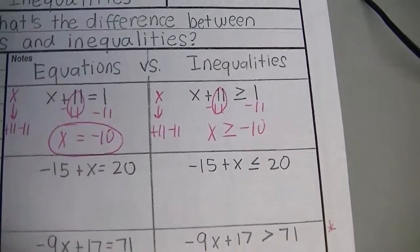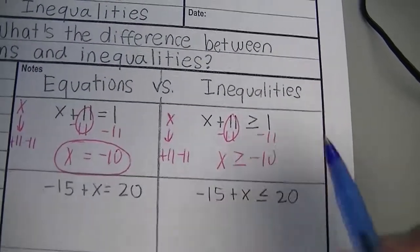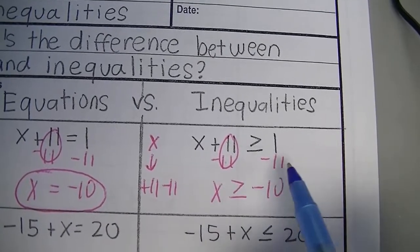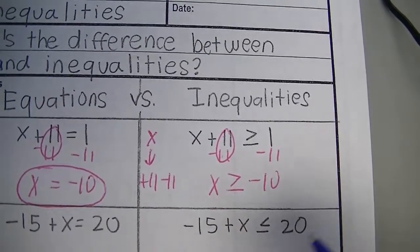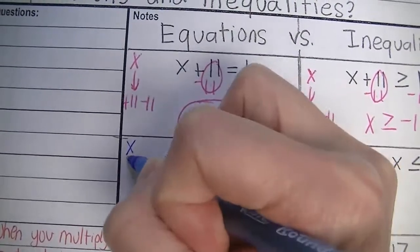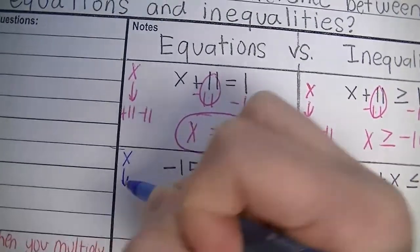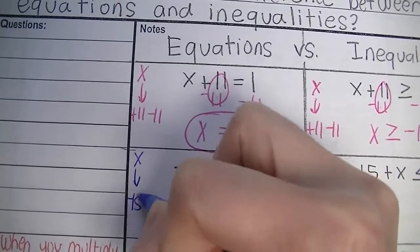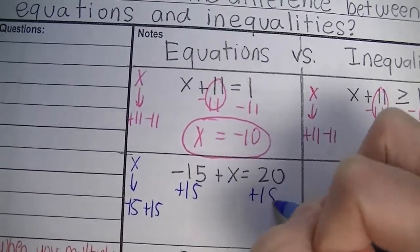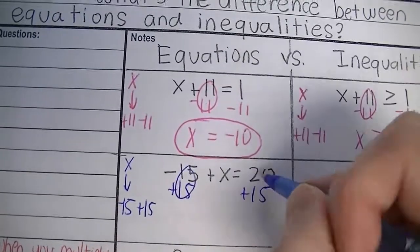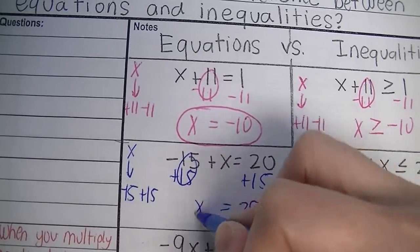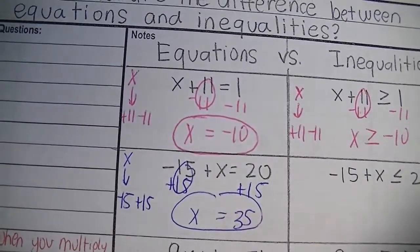Keep it consistent because all we did was subtract a number. Next problem — same type of thing. Started with the variable, then we subtracted 15. The inverse operation of subtracting 15 is to add 15, and you do that to both sides of the equal sign. Negative 15 plus 15 is 0. 20 plus 15 is 35. So x equals 35. That's the answer.